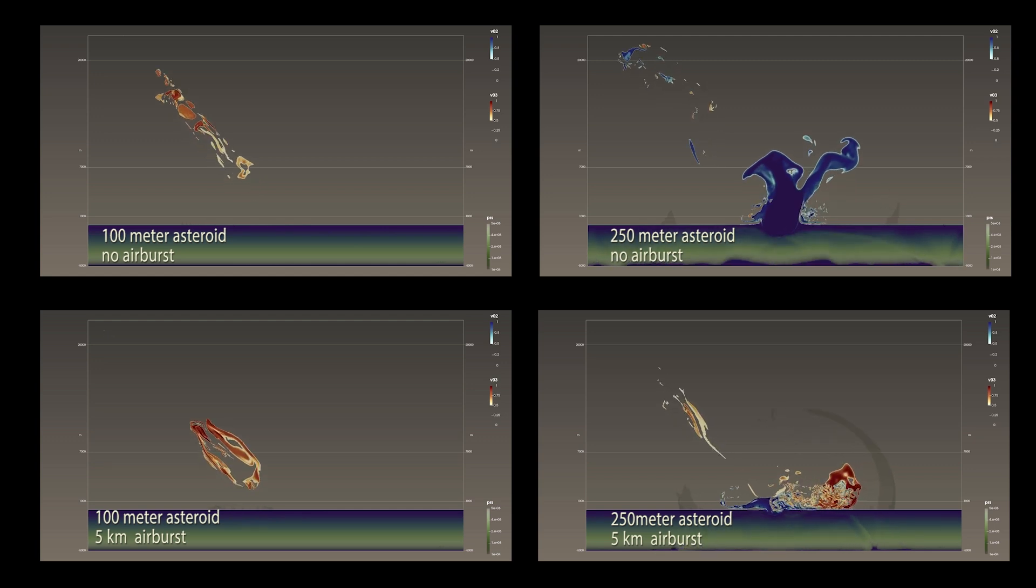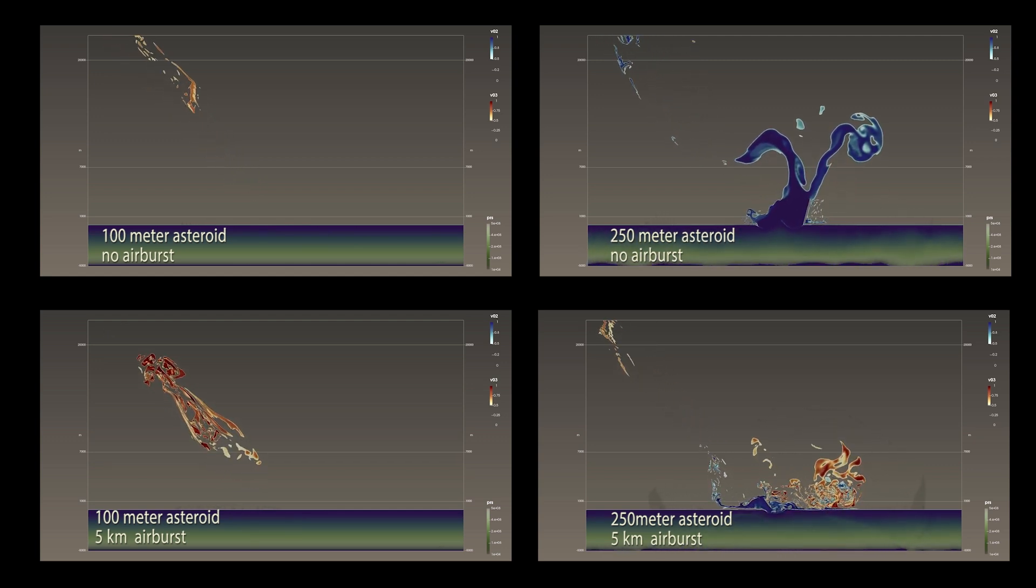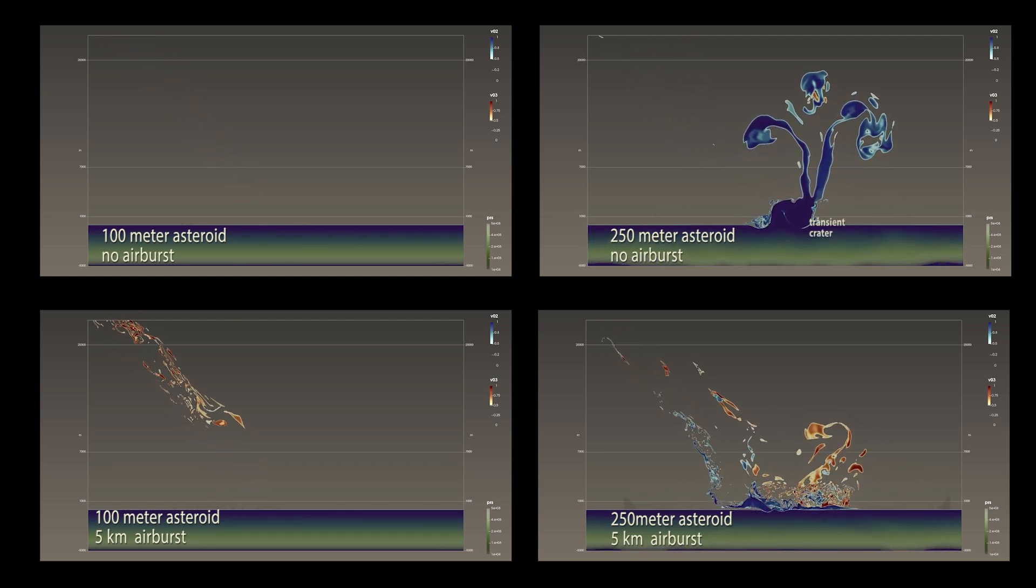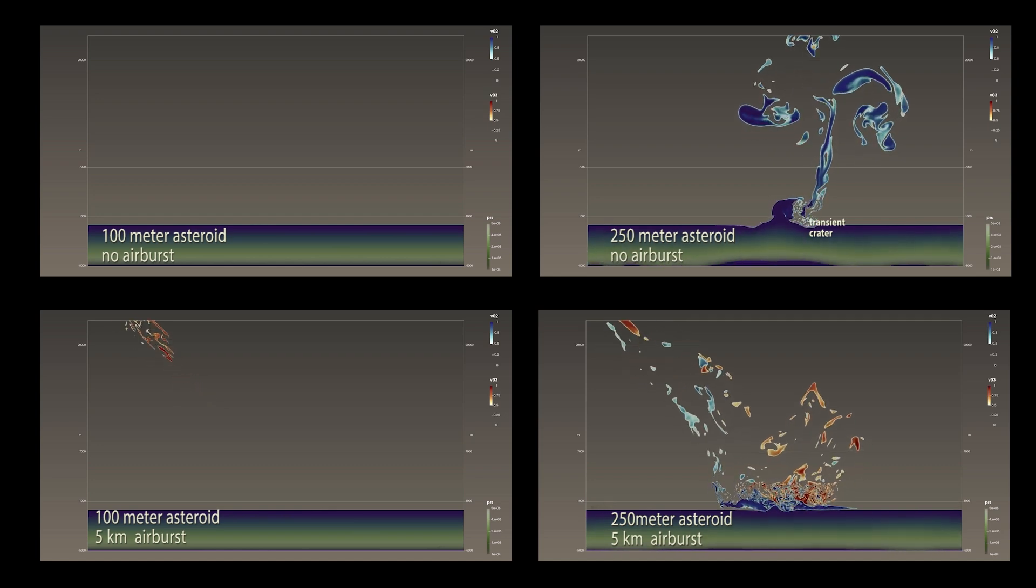Slicing through the dataset reveals more detail. The largest impact simulation shows development of a transient crater and a large plume of water and water vapor.